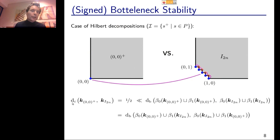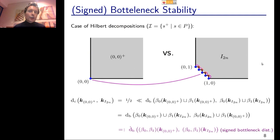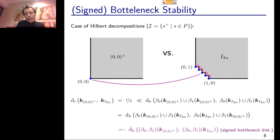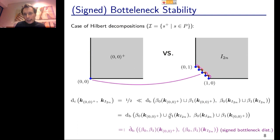The signed bottleneck distance between multigraded Betti numbers of two persistence modules is the usual bottleneck distance between the positive (even-degree) part of the first module's decomposition plus the negative (odd-degree) part of the second module's decomposition, and vice versa. More generally, for decompositions of the Hilbert function or rank invariant, you replace Betti numbers by collections of rectangles, upsets, hooks, or whatever, and take the positive part of one plus the negative part of the other.